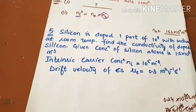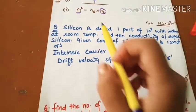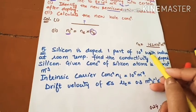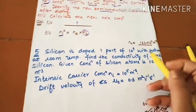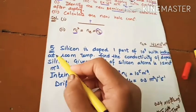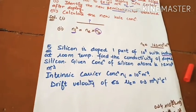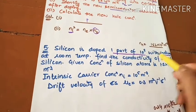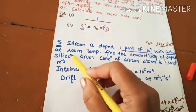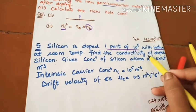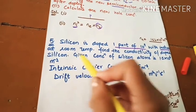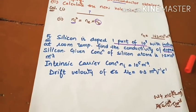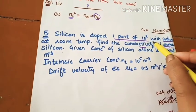Next one is very important numerical: Silicon is doped one part of 10 raised power 8 with indium. Indium means trivalent impurity added to silicon. At room temperature, find the conductivity of doped silicon.